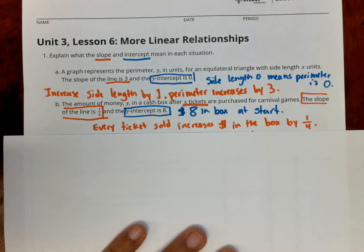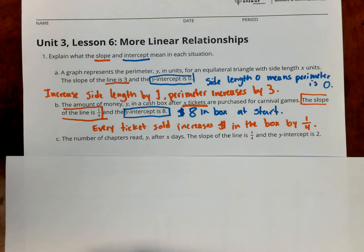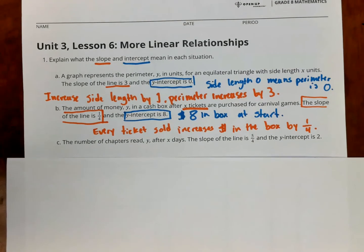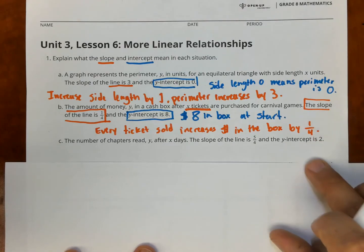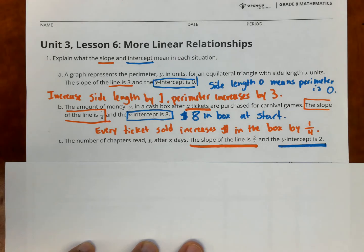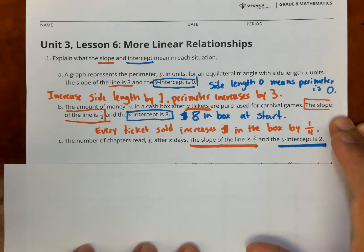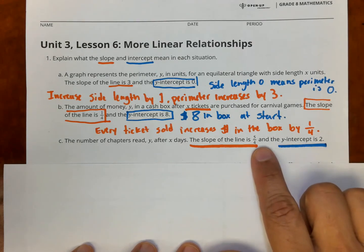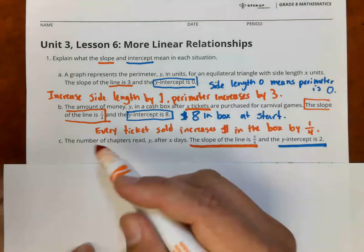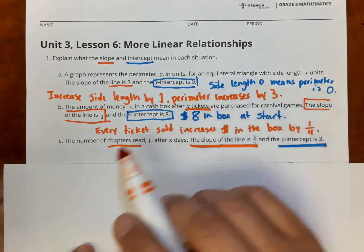Let's look at part C. The number of chapters read after x days. The slope of the line is 5 over 4. The y-intercept is 2. Now you should be noticing a pattern here, right? Like we saw in the previous problems, the previous parts. The slope of the line is 5 over 4. 5 over 4 what? Chapters read every day.